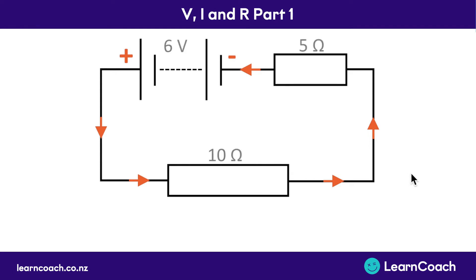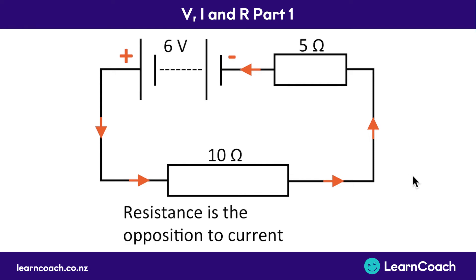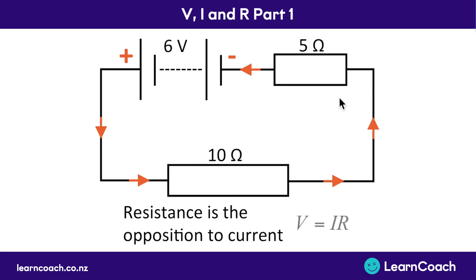Resistance is how much energy everything takes out of the current — it provides an opposition to that flow of charge. Resistors slow the current down, and if they do a really good job of slowing it down and provide a lot of opposition, that's going to be a big resistance. You can see this bottom one here has 10 ohms of resistance — that's twice as much resistance or twice as much opposition as this top resistor up here.